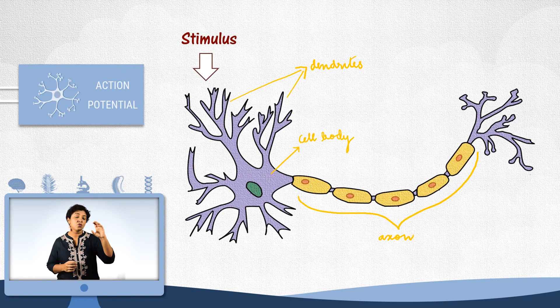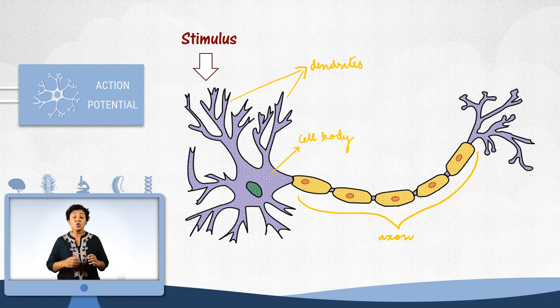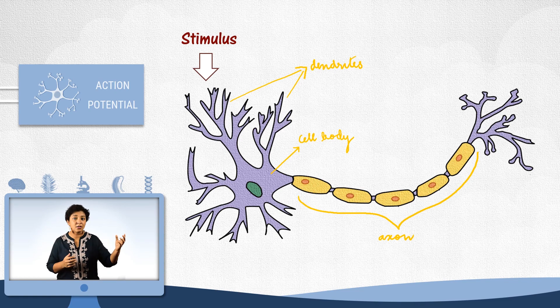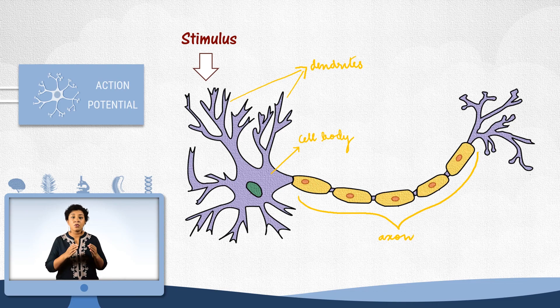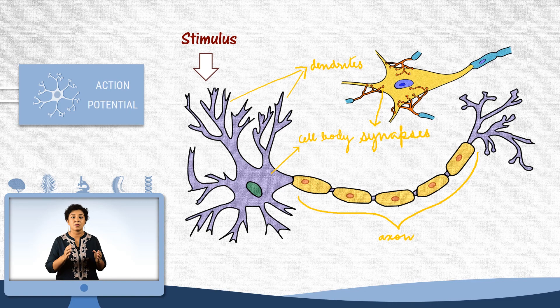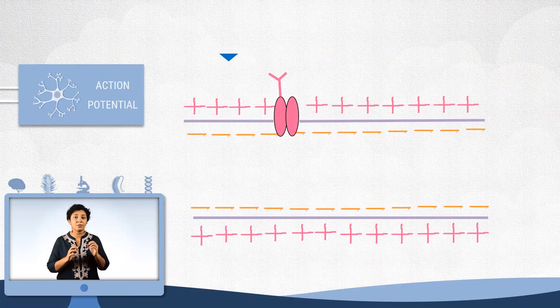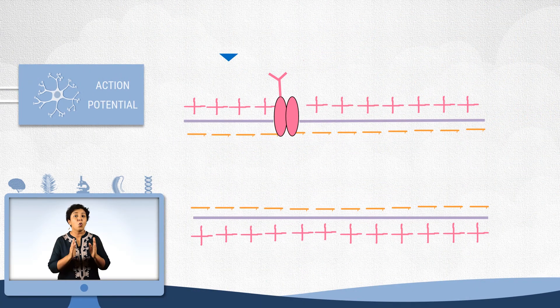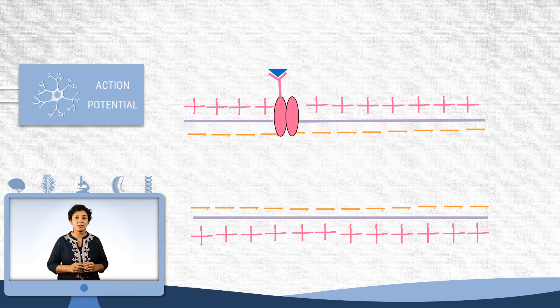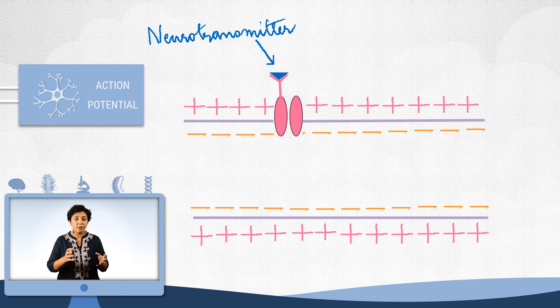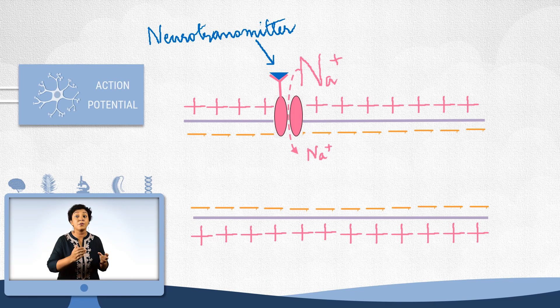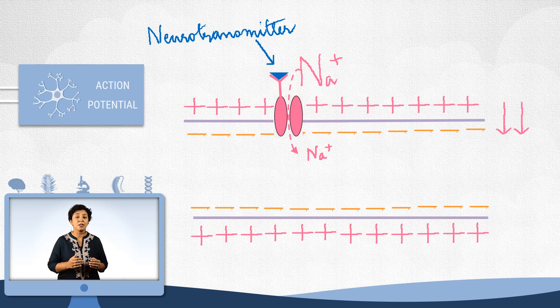Imagine a stimulus has reached the neuron. Usually, it is in the form of a chemical released from the preceding neuron called a neurotransmitter. And neurotransmitters reach the dendrites at specific sites called synapses. The synapses have a very special type of sodium channel. These are not open all the time. They are open only on binding specific neurotransmitters. And when these channels open, sodium will rush in driven by both the electrical and the concentration gradient.